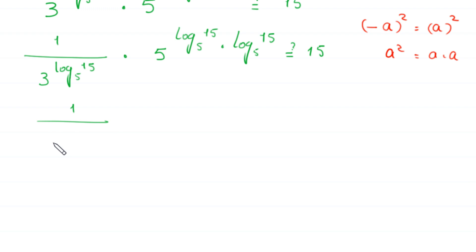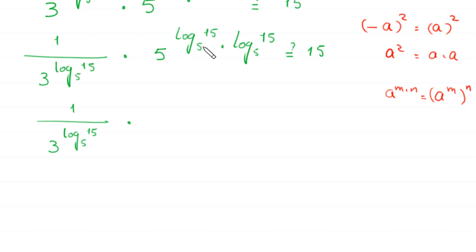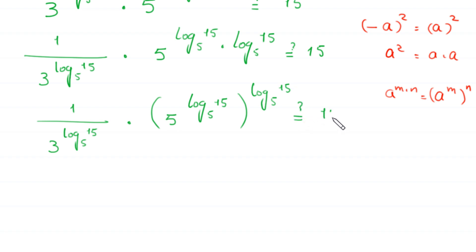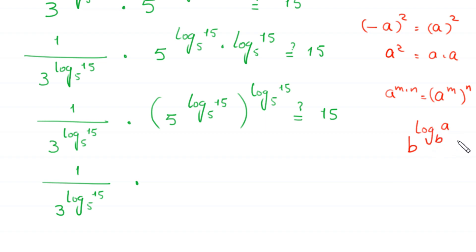Continuing: 1 divided by 3 to the power log base 5 of 15, times — using the property a to the power m times n equals a to the power n whole to the power n — this expression becomes 5 to the power log base 5 of 15, whole to the power log base 5 of 15, equals 15? By the log property b to the power log base b of a equals a, the inner part 5 to the power log base 5 of 15 becomes 15.